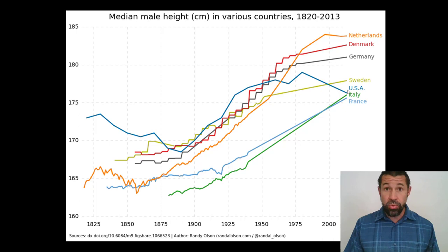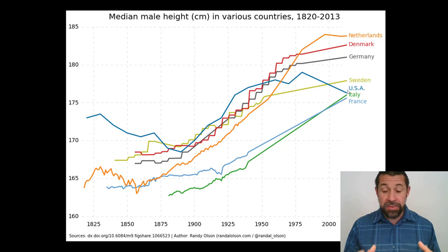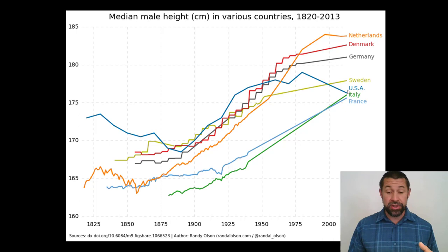Number one, sadly, is our eroding social safety net. All of these other European countries have universal health care — the Dutch have had it since 1941. The United States, though rich in terms of gross domestic product, has very high rates of income inequality, and unfortunately our child malnutrition rates are much higher than in these European countries with stronger social safety nets.